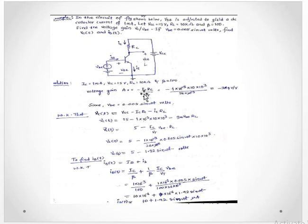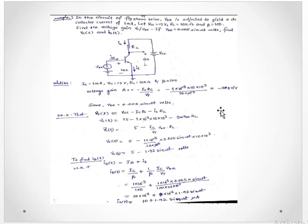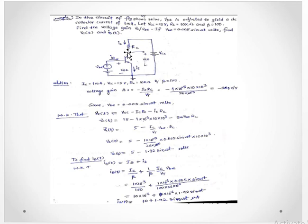Voltage gain is given by AV = −(IC/VT) × RC. Substituting IC, RC, and VT = 26 millivolt, you will get approximately −384. Since VBE = 0.005 sin(ωt), from this circuit the collector output voltage VC(t) can now be determined.